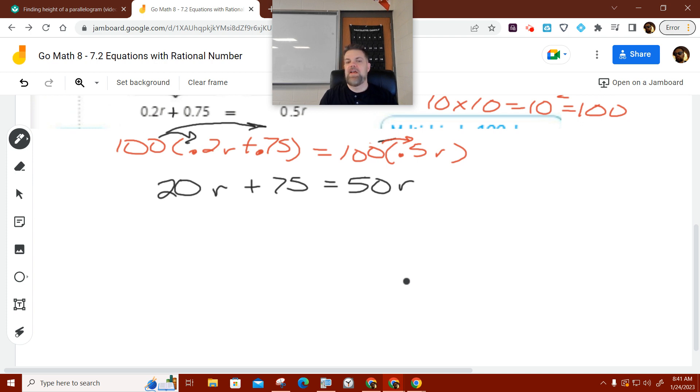Alright. So now, what's our next step? We need to get R equal to some stuff. I know the bell's going to ring in a couple minutes. Do not start putting your stuff away. We're almost done. Which R is bigger, 20 or 50? 50. So we're going to move the 20 by subtracting 20R. And when you subtract 20R from one side, you got to do the same thing to the other. That leaves you with 75 is equal to, what's 50 minus 20?